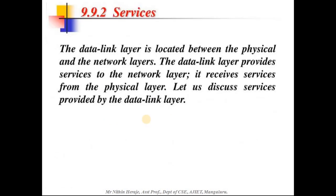The data link layer is located between the physical layer and the network layer. It provides services to the network layer and receives services from the physical layer. At the destination end, the data link layer receives data, removes the encapsulation from the frames — that is, decapsulates — and transfers the packet to the network layer.